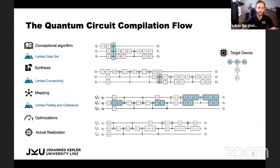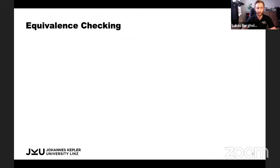So while it's very important that this compilation flow that takes the conceptual algorithm to the actual realization is as efficient as possible, it's also very important that it is correct, meaning that the resulting circuit still realizes the intended functionality from the original algorithm. And this takes us to equivalence checking.